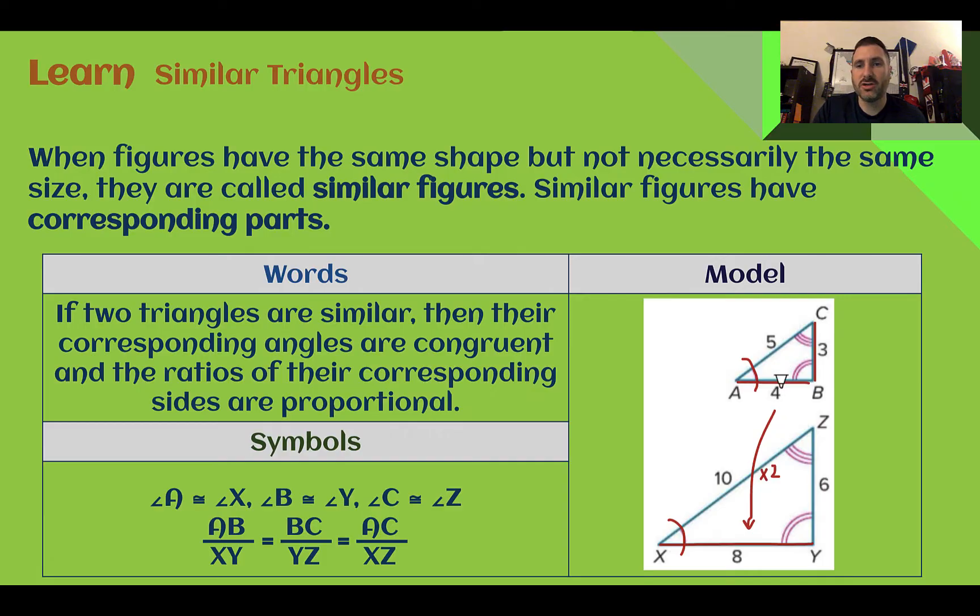And for the sides, you might see them shown as corresponding with these little hash marks. So one hash mark with one hash mark, two hash marks with two hash marks, and then three with three. Again, those just show you that they're corresponding, so you can help find the ones that match.